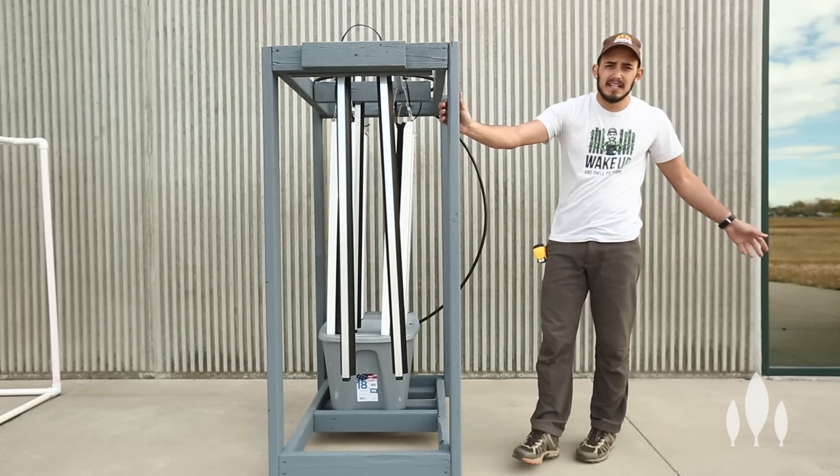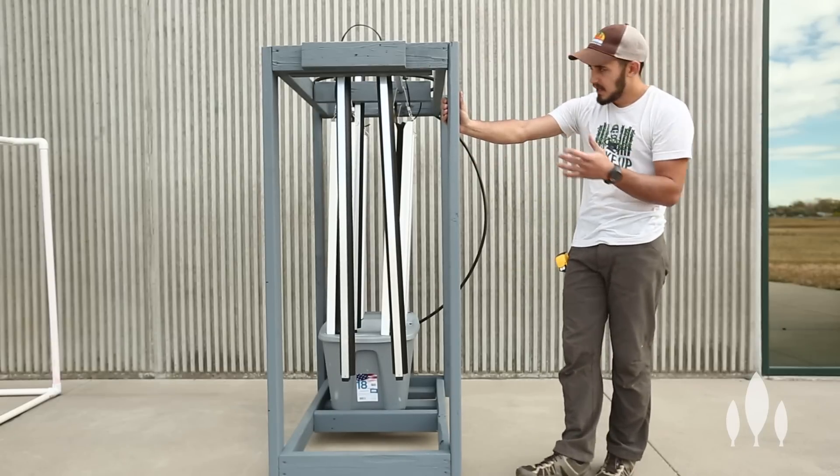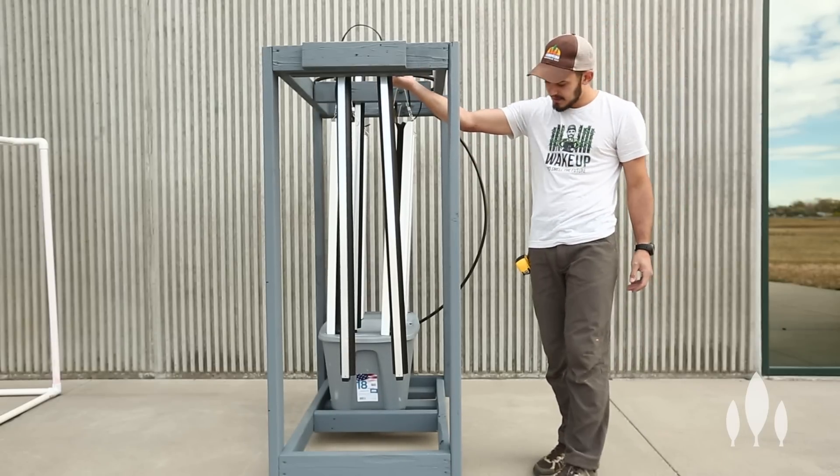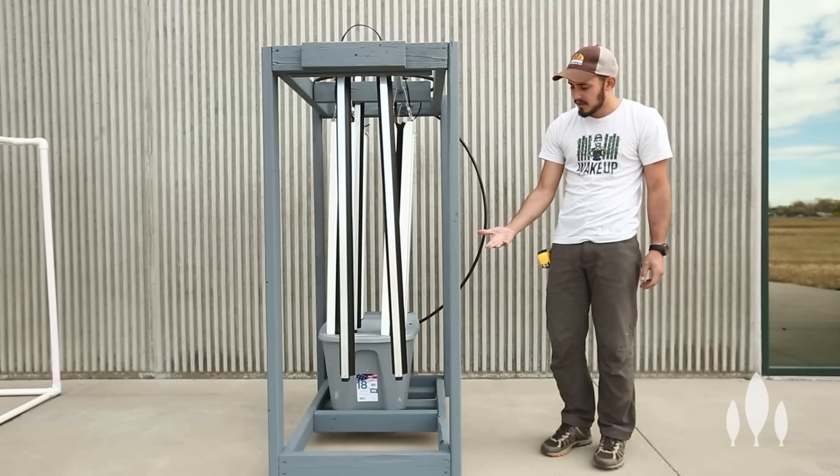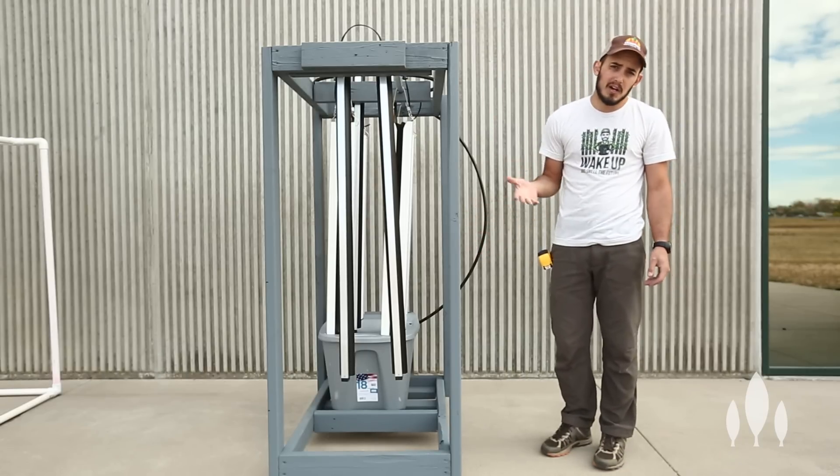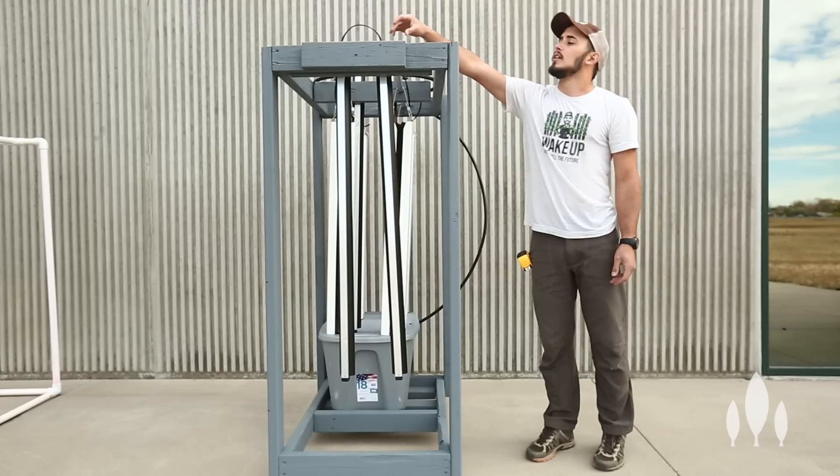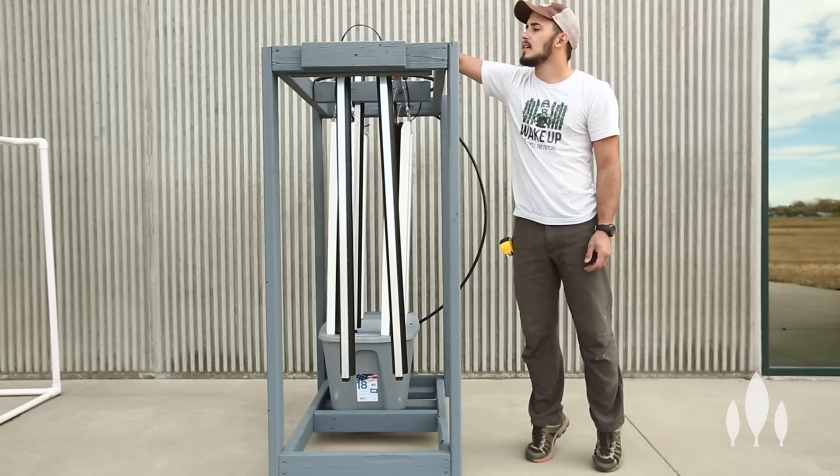So this rack is built off the same dimensions as that rack. The height that we're hanging our towers is the same, the height of our sump is the same. The only thing that we've done is we've elevated our sump onto a platform and put it on wheels.